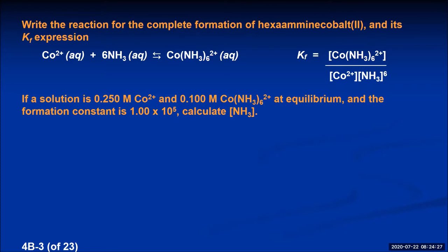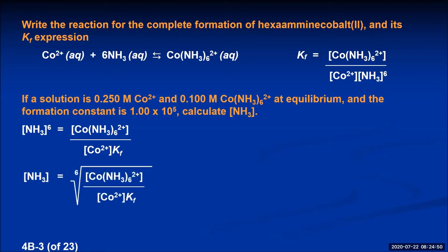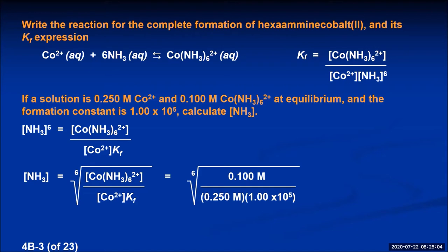The only thing we don't know is the ammonia concentration. So if we want to solve for that, I'm going to move the ammonia concentration to the sixth power to the numerator on the left side and bring the Kf down to the denominator on the right side. I've now solved my expression for the concentration of ammonia to the sixth power. To get just the ammonia concentration, take the sixth root of both sides. The concentration of ammonia will be the sixth root of the complex ion concentration divided by the cobalt 2 ion concentration times Kf, which turns out to be 0.126 molar.